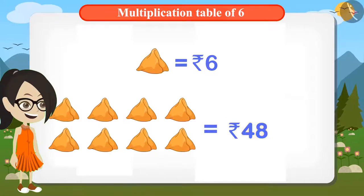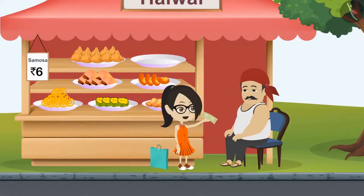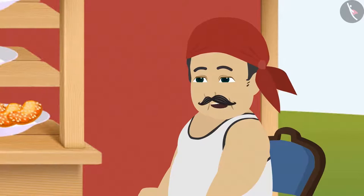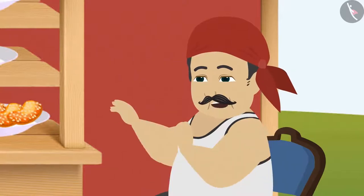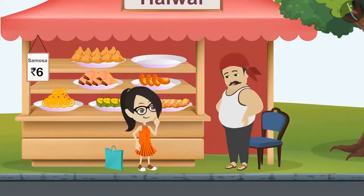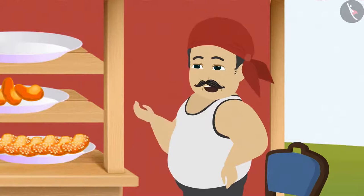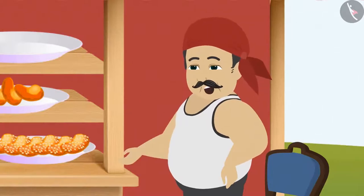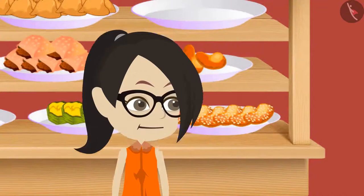Do you think Vandana's answer is correct? Vandana hands over the money: "Here it is, Uncle — forty-eight rupees." Chaggu replies: "Oh wow, Vandana! You have calculated the amount correctly. Now that you have written the table of six, remember it well. You will be able to solve such questions without paper and pen from now on."